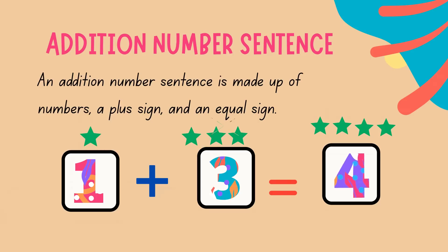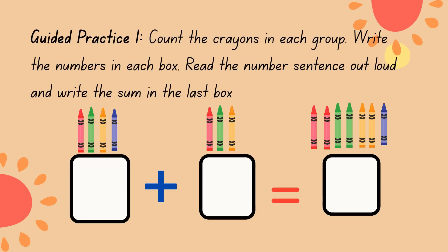Let's look at some more examples. Number 1: Count the crayons in each group. Write the numbers in each box. Read the number sentence out loud and write the sum in the last box. Let's count: 1, 2, 3, 4.